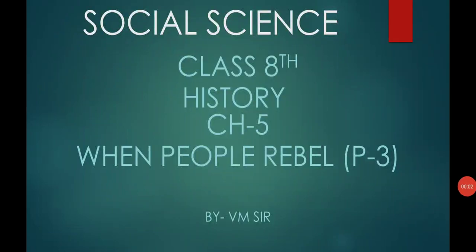Good morning students. Let's continue with the third part of Chapter 5, 'When People Rebel.' Till now, in Part 1, we studied the introduction and various causes — political, economic, social, religious, military, and immediate causes of the Revolt of 1857. In Part 2, we learned how the revolt started and how the rebellion spread over the area. Now, in Part 3, we will study the results of the revolt and why it failed.